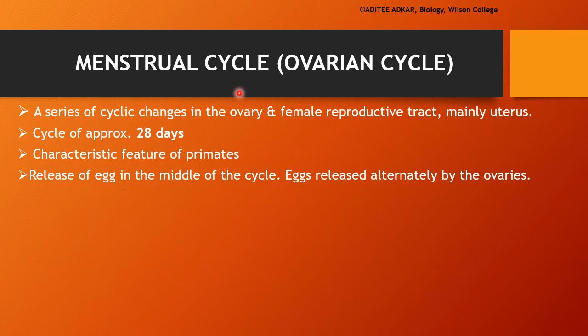The menstrual cycle, or the ovarian cycle, is a series of cyclic changes occurring in the ovary and the uterus. The cycle is approximately 28 days, though it may vary by a few days in every female. This cycle is a characteristic feature of animals called primates, which include human beings, monkeys, apes, and some other animals.